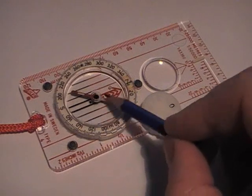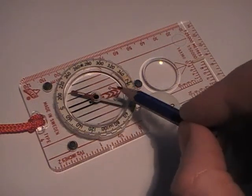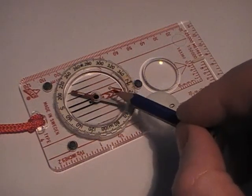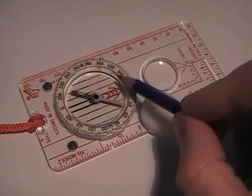That's the orienting arrow. Two luminous sections either side of it and the orienting lines.